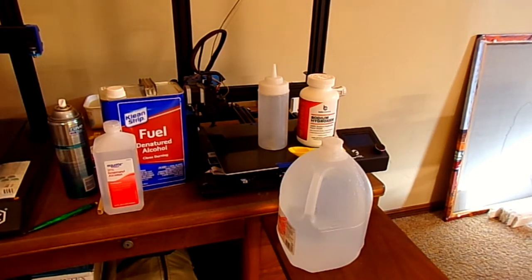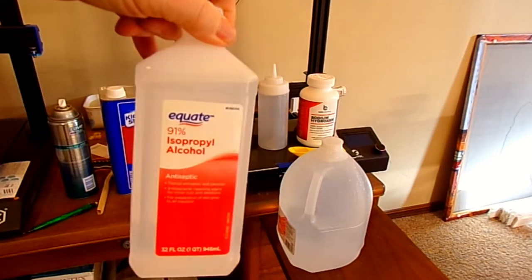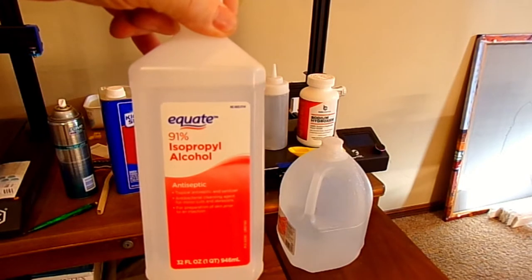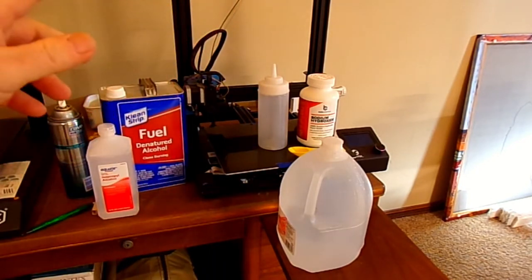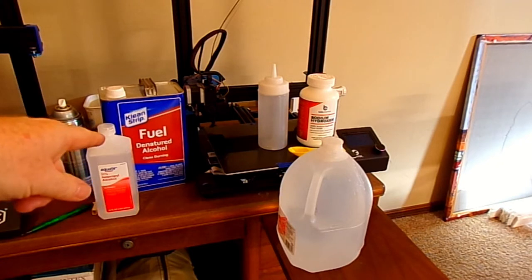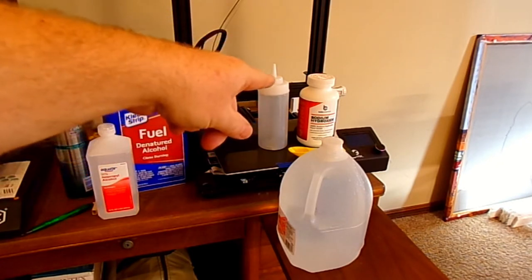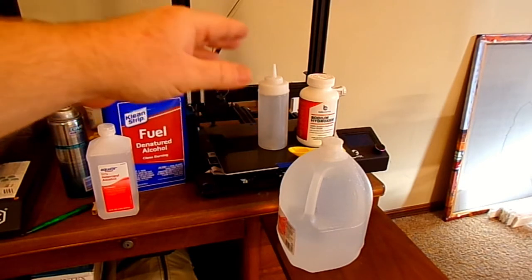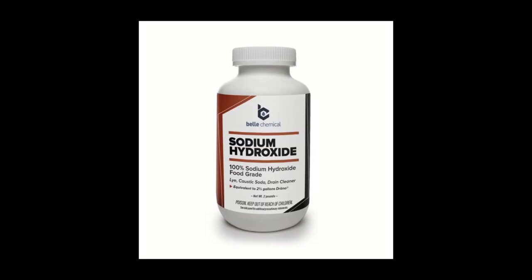I read that you can basically make a CA accelerator using isopropyl alcohol, denatured alcohol, and then the actual accelerant is sodium hydroxide, which is a strong base. However, we're only going to use a one percent solution of sodium hydroxide.